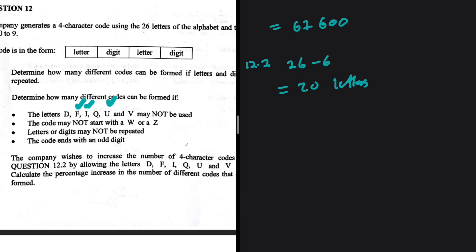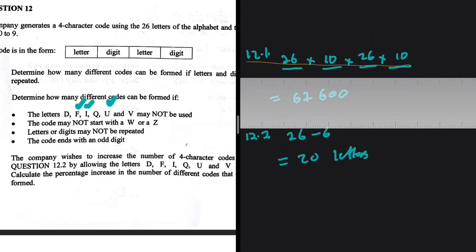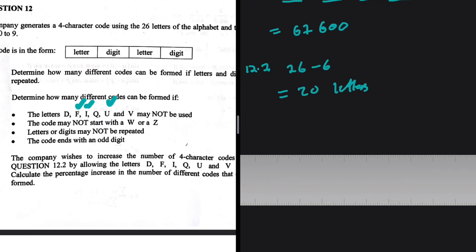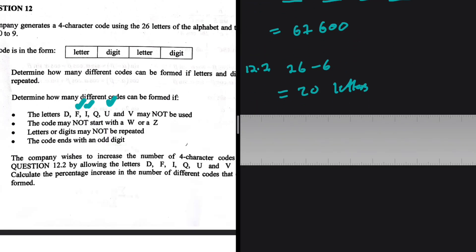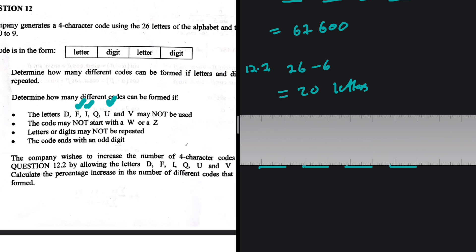Those are our conditions. Let's go ahead and see what we can come up with. We have four spots that we need to fill. Let's start with the spots that have conditions. The spots that have conditions are the first and the last.